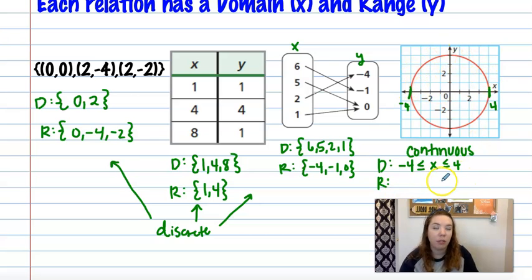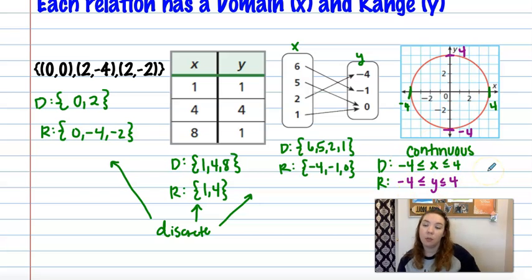And then for my range, I'm doing the same, but for my y's. So my very lowest y value is negative four. My very biggest y value is positive four. So this is going to look the same, but instead of x, I'm going to put in a y here. So that's how you write a continuous domain and range.